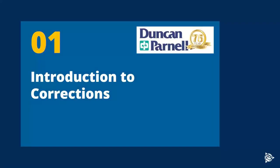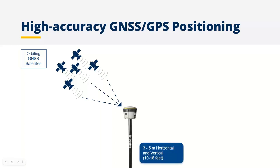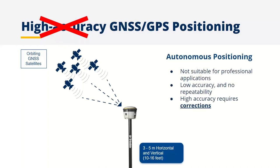Starting off with corrections, I'll begin very basically and evolve into explaining how Trimble RTX works. If you take a standard GNSS receiver — for example, the Trimble R2 — and take it outside tracking GNSS satellites with nothing else assisting you, you'll receive about three to five meters of accuracy. We don't consider this high accuracy — this is autonomous positioning. It's not suitable for most professional applications, and due to the low accuracy it's also not very repeatable. In order to have high accuracy positioning, you need some type of correction.